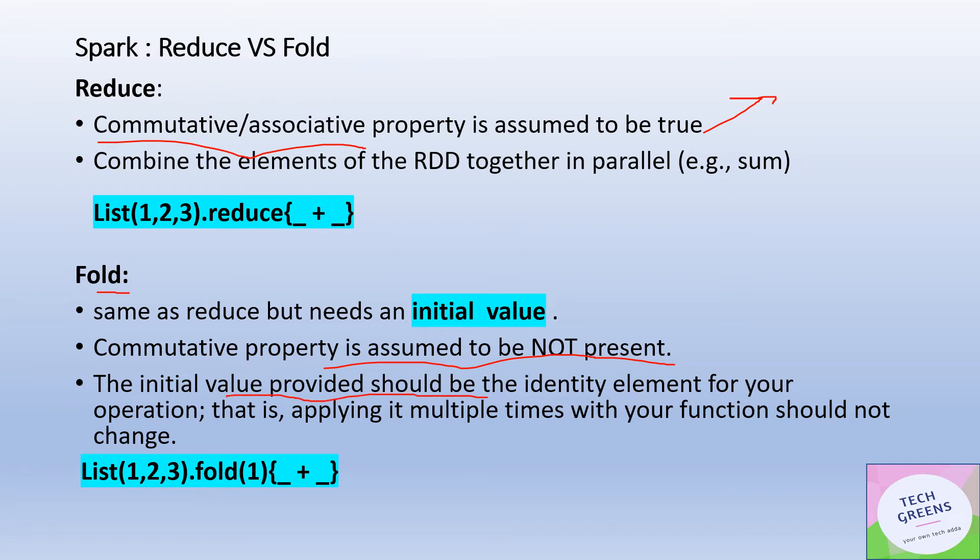For example, if I'm doing a summation, my initial value could be zero. If I add zero multiple times to the actual values, it will not cause any difference to the eventual result. Similarly, another example could be if I'm trying to do a multiplication.